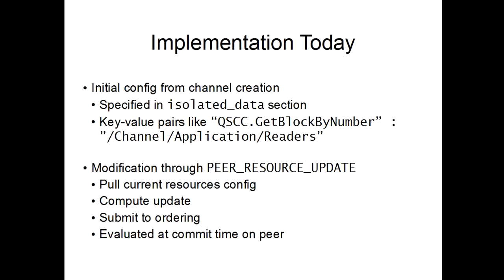That's how these ACLs are initially specified. Based on feedback from users, that seems to be pretty much the extent of how people utilize ACLs today. It is possible to modify them through a peer resource update, which is very similar to a config update — you pull the current resources config, modify it, compute an update, and submit that update to ordering, where it is eventually evaluated at the peer. I don't think anyone has actually been doing these peer resource updates, but that is the mechanism in place.